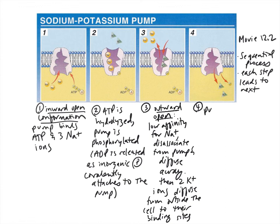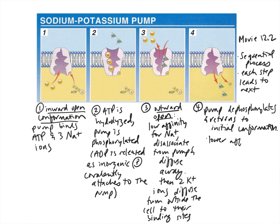And the last step, step four, is that the pump dephosphorylates. You can see the little phosphate that in step three was attached here, it's going to fall off, and this is going to change the pump back to its original conformation, which is facing inwards. At this time, the pump has a lower affinity for potassium, but it has a high affinity for sodium. And potassium will disassociate from the pump and diffuse into the cell.